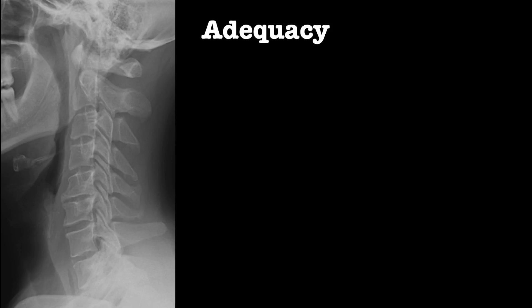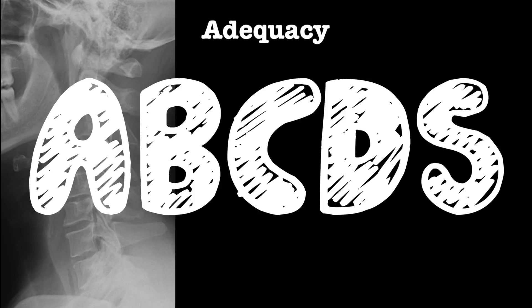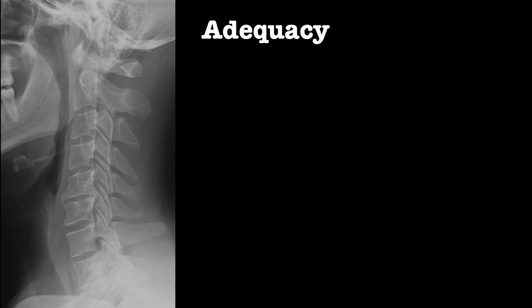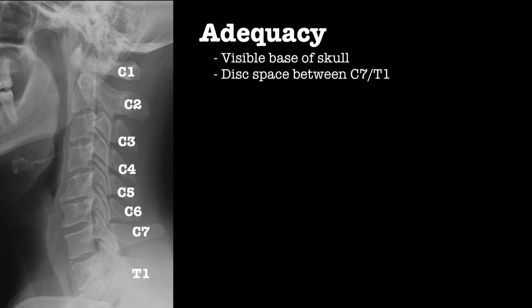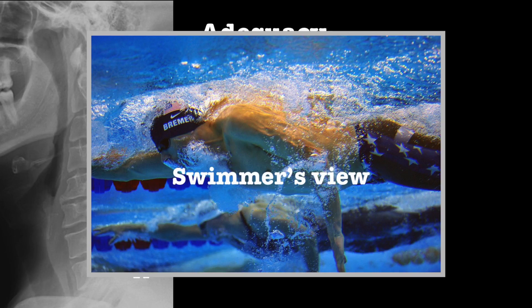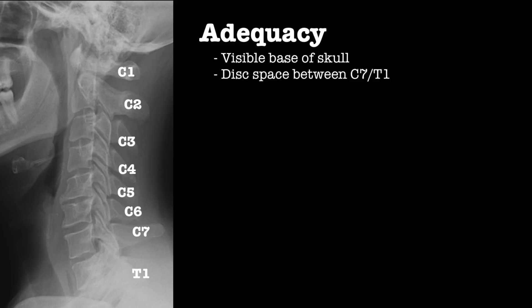On your lateral x-ray, work through your ABCDs. A is for adequacy and alignment. For adequacy: is the skull base to C7-T1 disc space visible? If not, you need to ask for a swimmer's view, where the patient is asked to lift their arm up, and this clears the humeral head of the cervicothoracic junction.